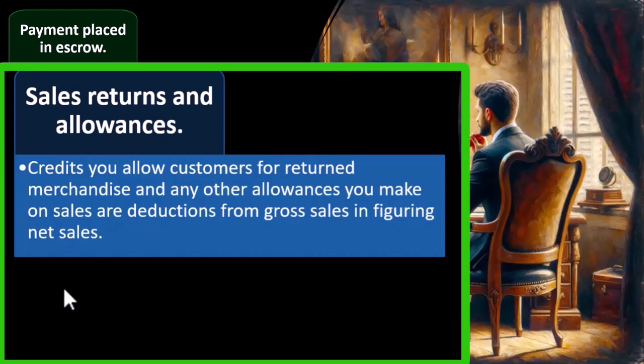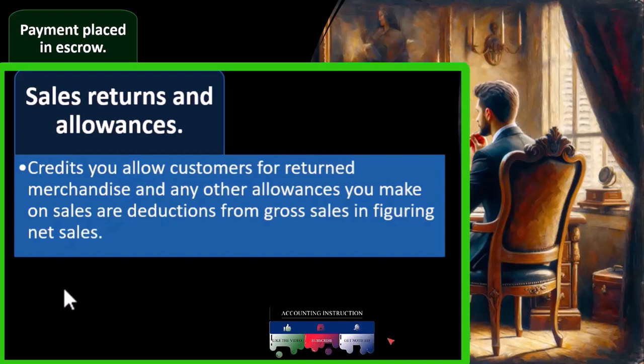If something happens and items that were sold get returned, you can reduce sales. For example, if I sell something and get cash for it — cash increases, revenue increases — and then the customer returns the item, that triggers a returns and allowances entry.